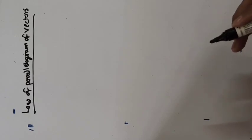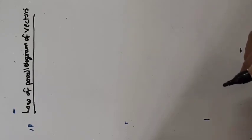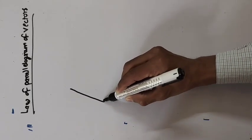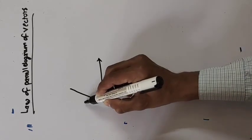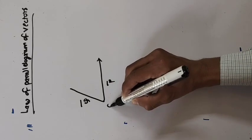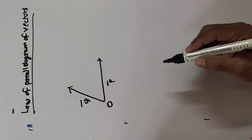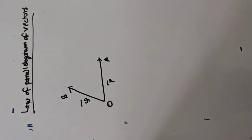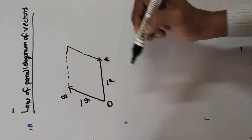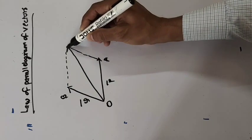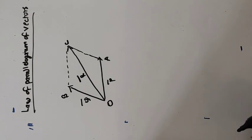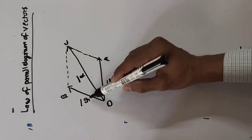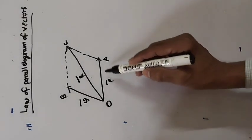To understand the statement of this law, let us first discuss the diagram. We consider two vectors P-bar and Q-bar starting from a common point O. OA represents vector P-bar in magnitude and direction, and OB represents vector Q-bar in magnitude and direction. We then complete the parallelogram and draw the diagonal OC, which represents R-bar — the resultant of the two vectors P-bar and Q-bar.